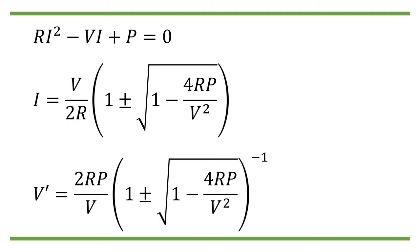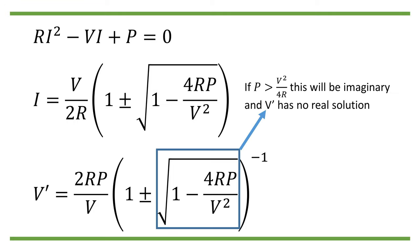The most important of all is that there is a fundamental limit on the power consumption of the load coming out of the math. Namely, if P is greater than V squared divided by 4R, then there will be a negative value in the square root bracket. So there will be no physically meaningful solution for V prime. The system breaks down, and we call this situation voltage collapse. If P happens to be exactly equal to V squared divided by 4R, we have exactly one solution: V prime equals 2RP divided by V.